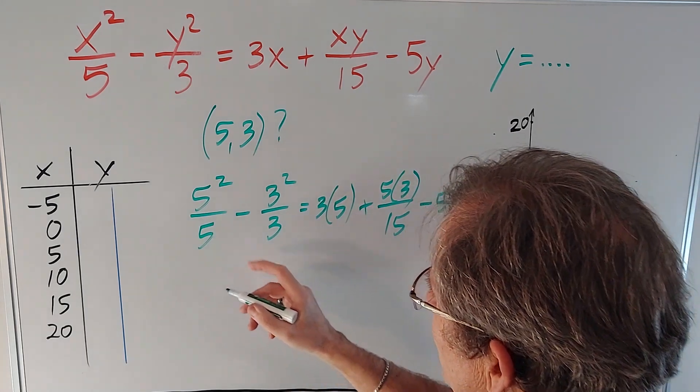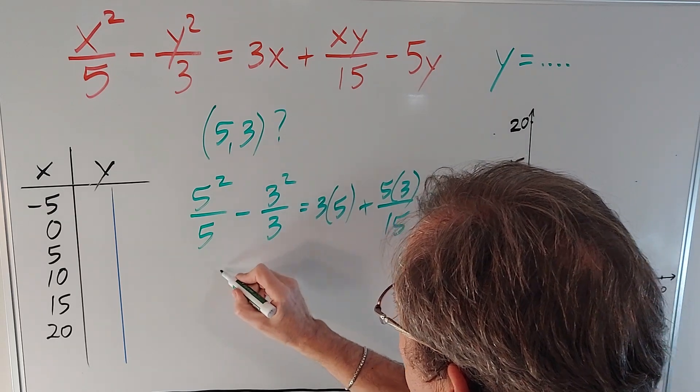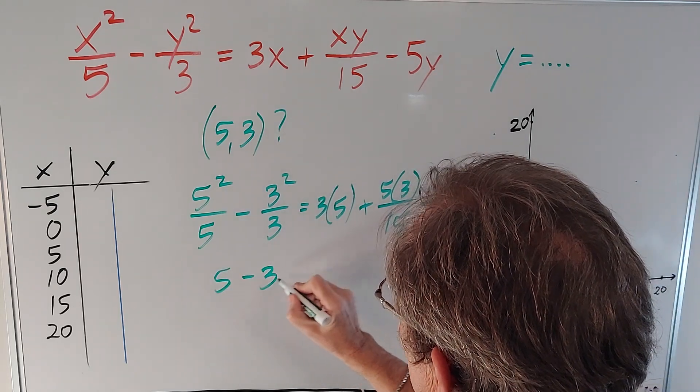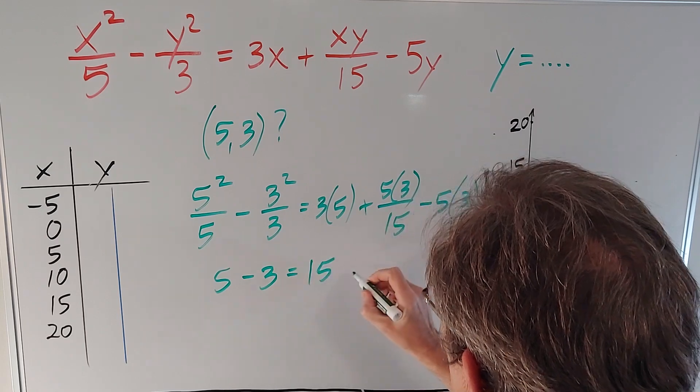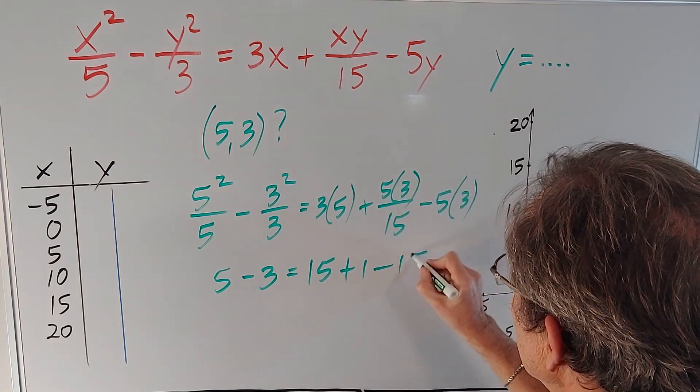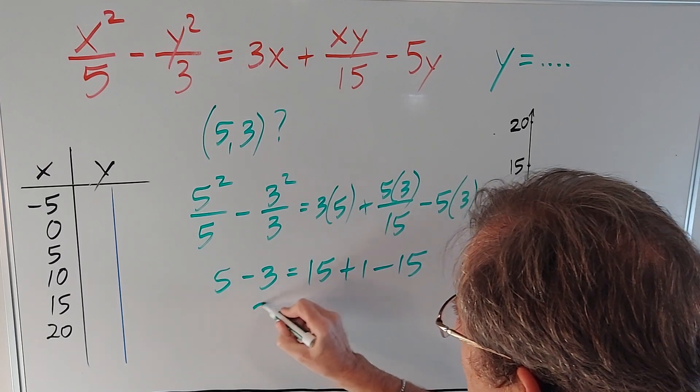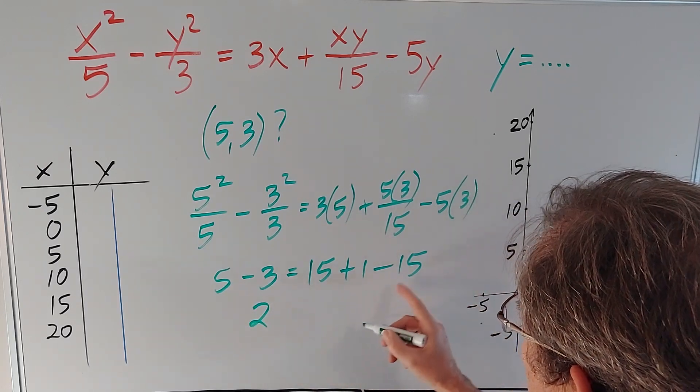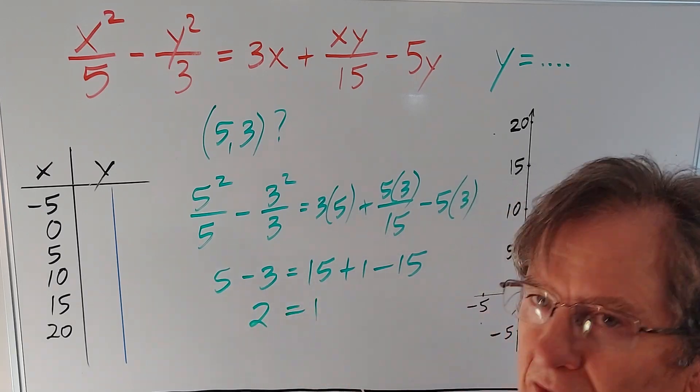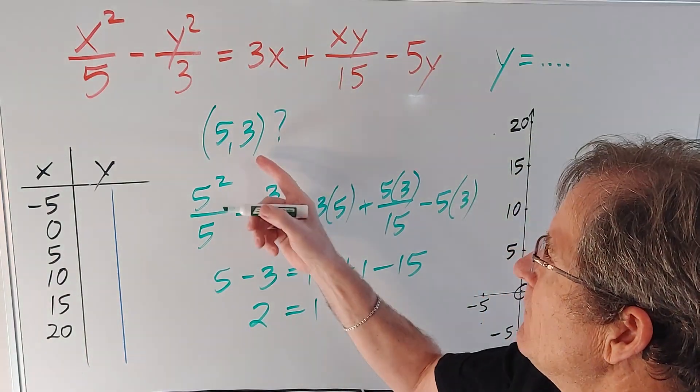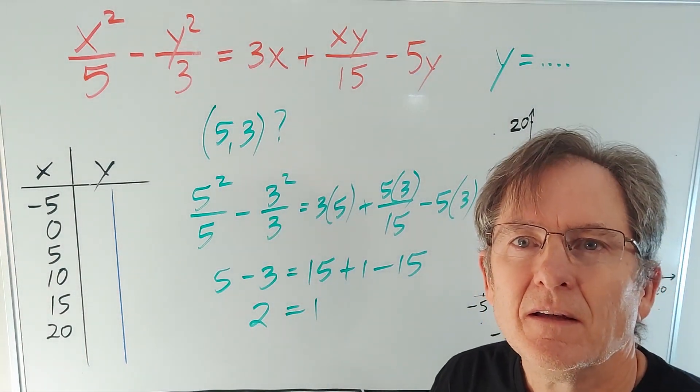Let's simplify that. 5 squared over 5 is 5. 3 squared over 3 is 3. That's 15 plus 1 minus 15. 5 minus 3 is 2. 15 plus 1 minus 15 is 1. So sadly the point (5,3) is not on the hyperbola.